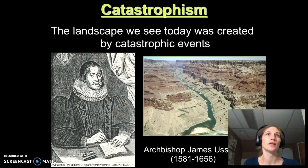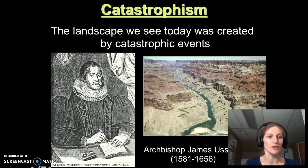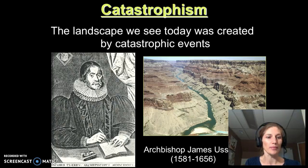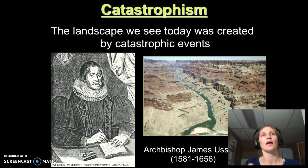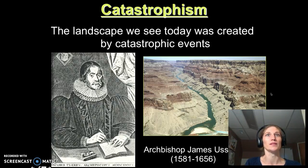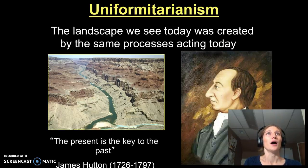Prior to this time, people thought that the landscape we see today was created by catastrophic biblical events — most notably the biblical flood. The image here is Archbishop Usher, who lived from 1581 to 1656. He went through the Bible and counted back generations — whom begat whom — and used those dates to determine the absolute age of the earth, calculating it down to 4004 BC. At the time, places like the Grand Canyon were thought to have been formed during the biblical flood, not by slow ongoing processes.